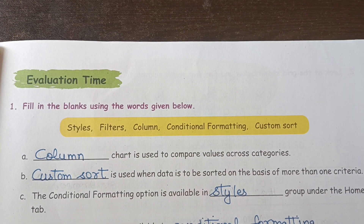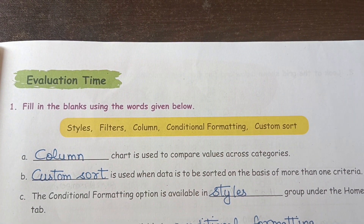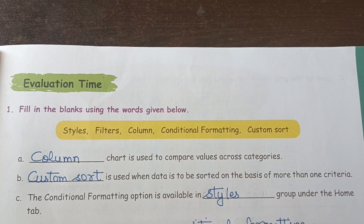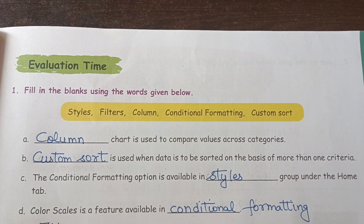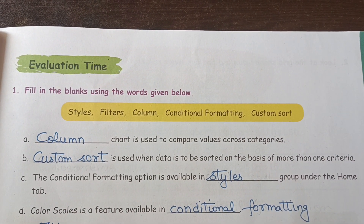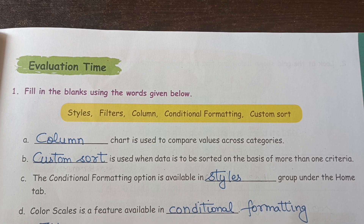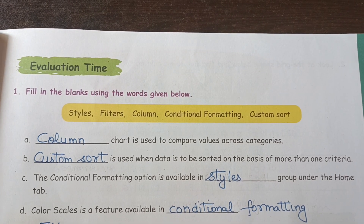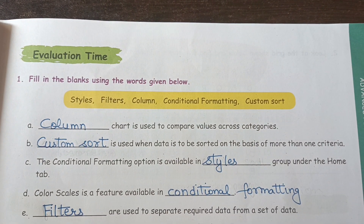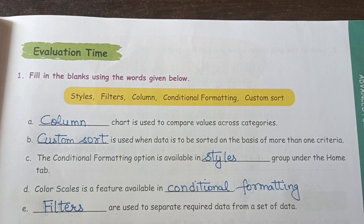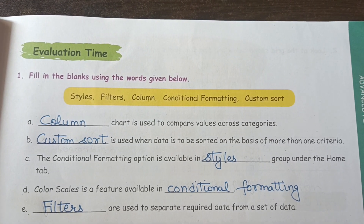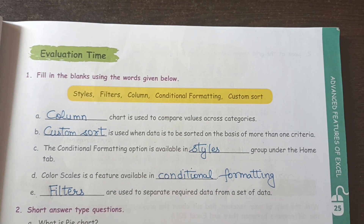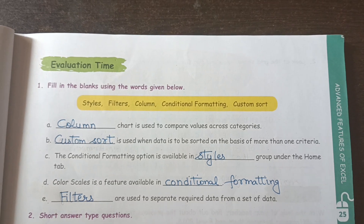The conditional formatting option is available in the styles group under the home tab. Color scales is a feature available in conditional formatting. Filters are used to separate required data from a set of data. So these were the fill in the blanks.